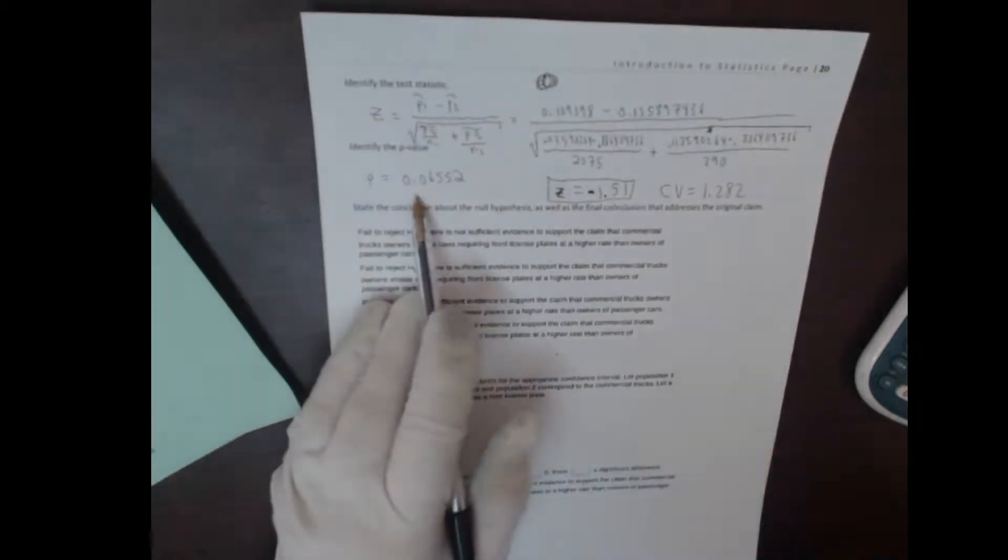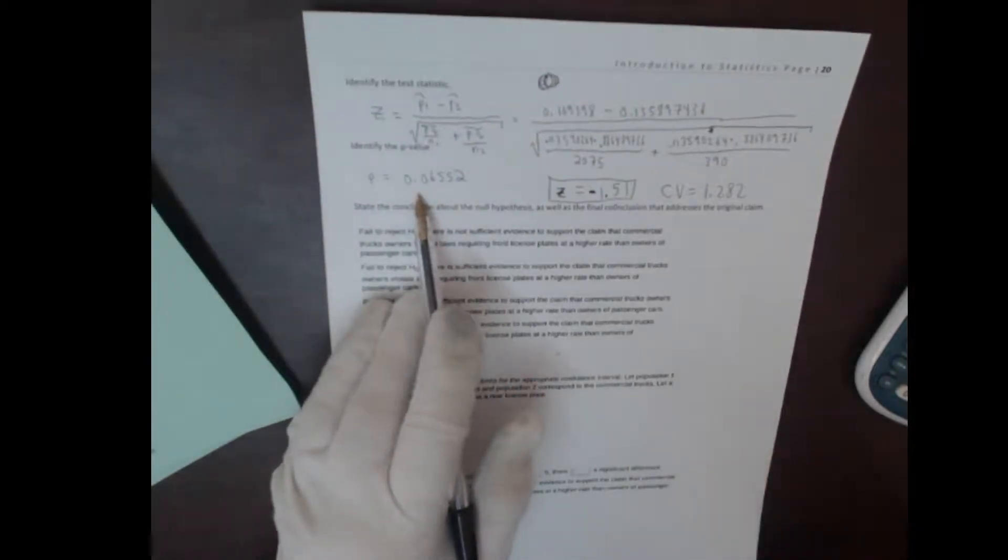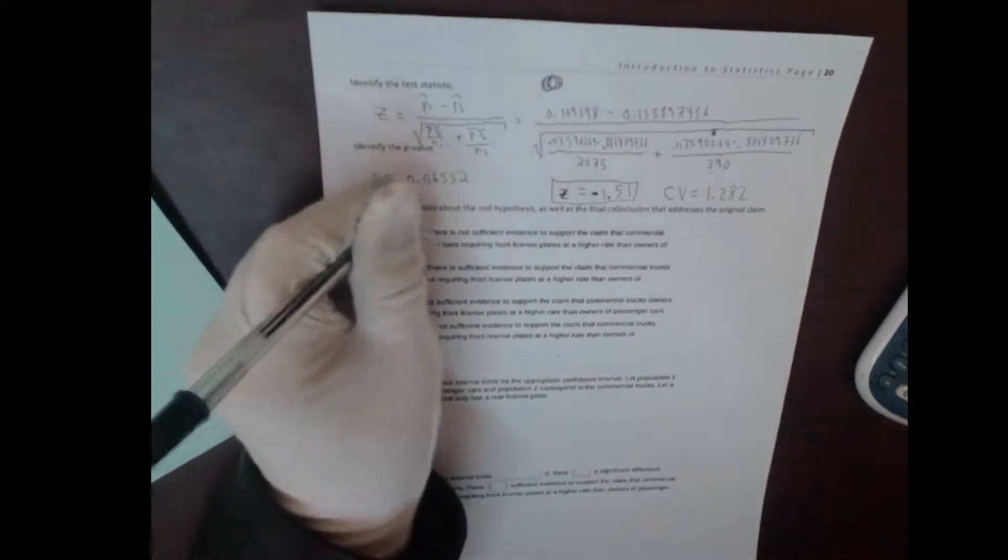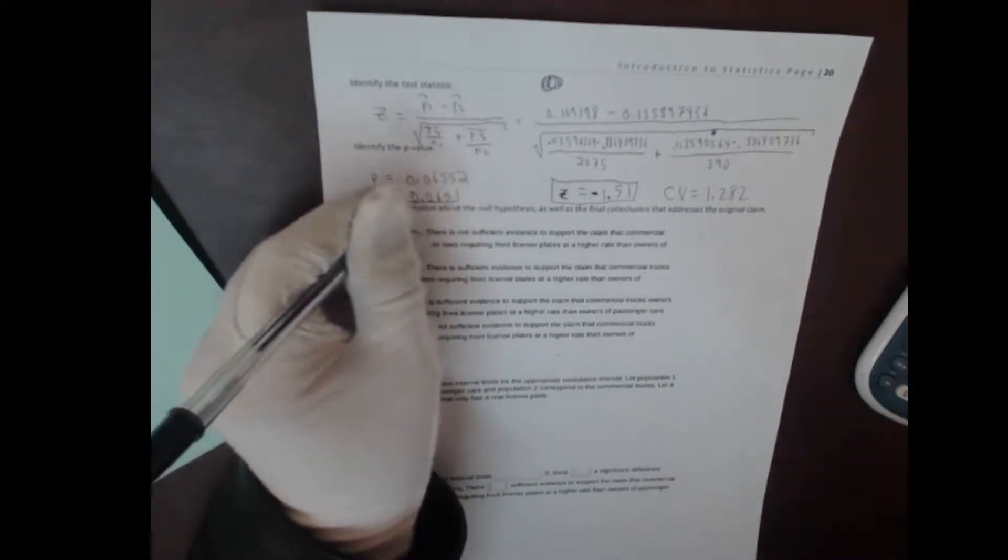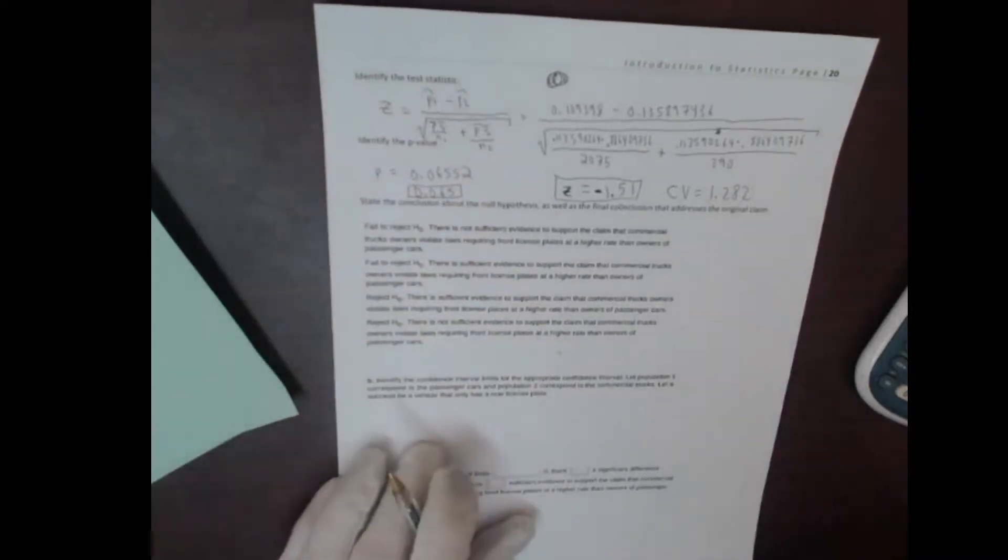The computer wanted me to round to three decimal places, so the final answer is .0655. Make sure you check carefully what you need to round to when you're doing the problem.